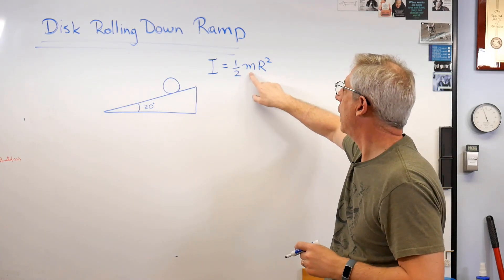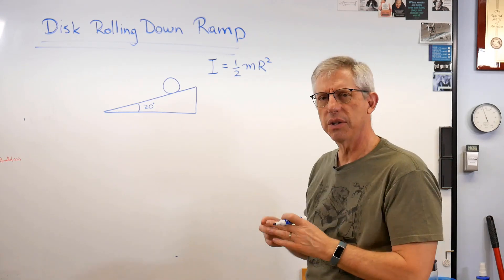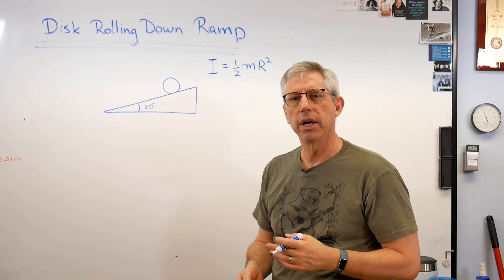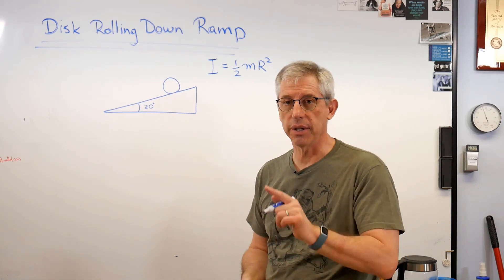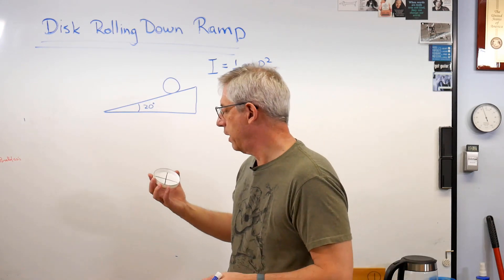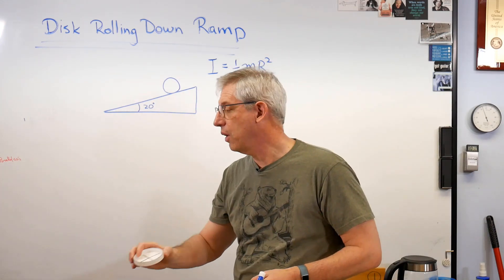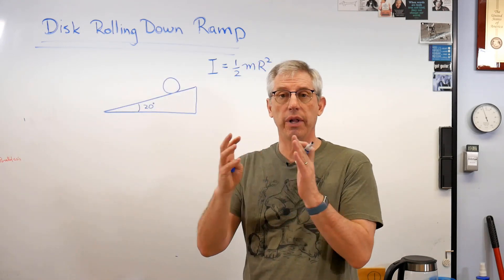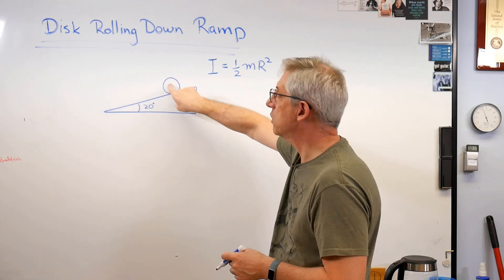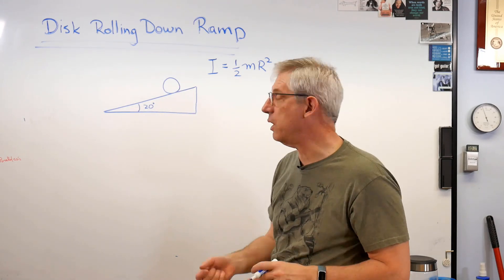It's one-half MR squared. M is the mass. R is the radius. Notice that the depth into the board doesn't show up here. So it doesn't matter whether it's a disc like this one I just dropped on the floor, which is really narrow, or if it were long like a barrel or something, it's going to act the same way. So the depth of this, whether it's essentially two-dimensional or it's really deep, works the same way. So you don't need to worry about that.